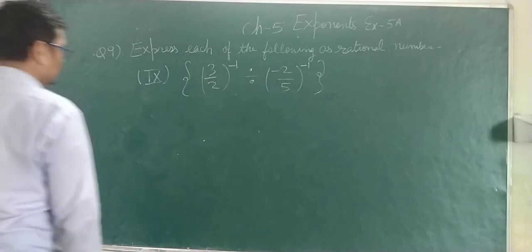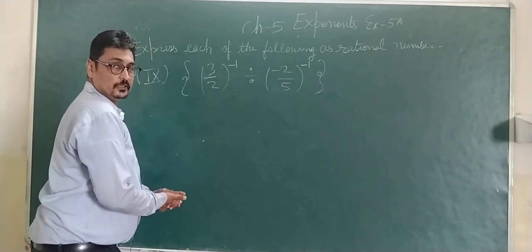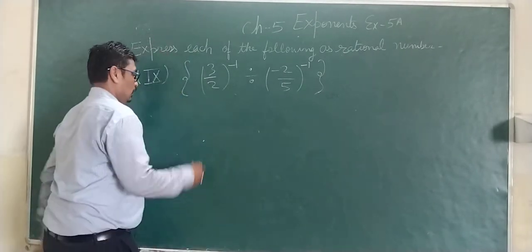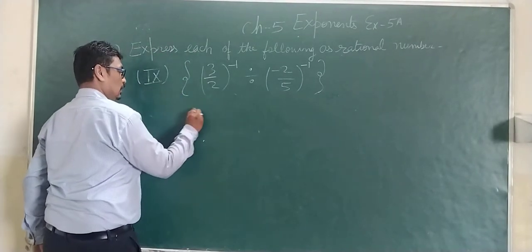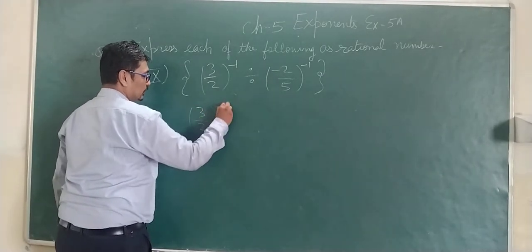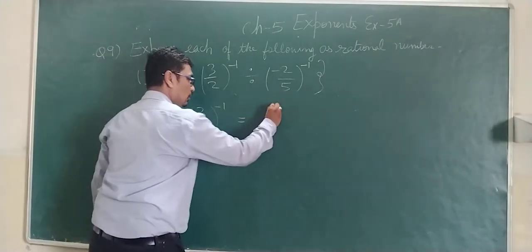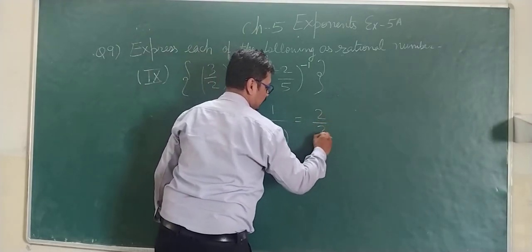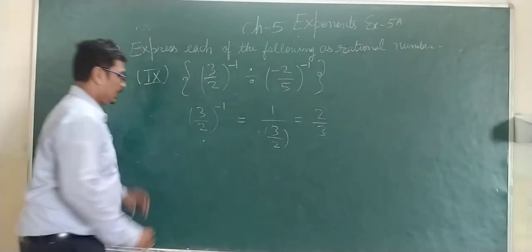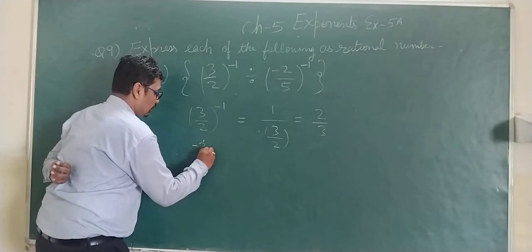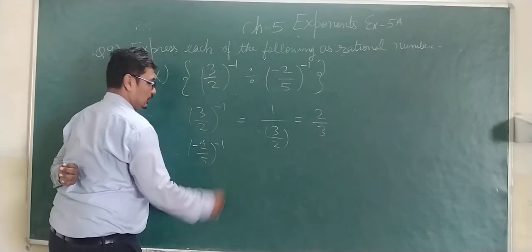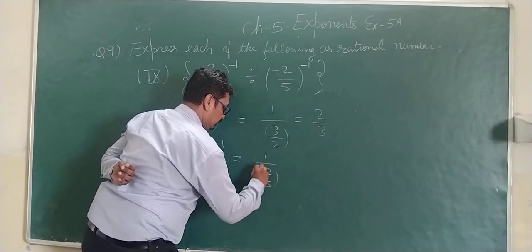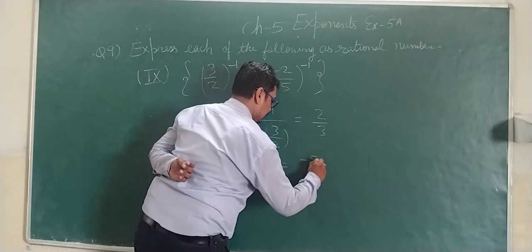Next part: 3 upon 2 raised to the power minus 1, divided by minus 2 upon 5 raised to the power minus 1. 3 upon 2 raised to the power minus 1 can be written as 1 upon 3 by 2, which becomes 2 upon 3. Similarly, minus 2 upon 5 raised to the power minus 1 becomes 1 upon minus 2 upon 5, which gives minus 5 upon 2.